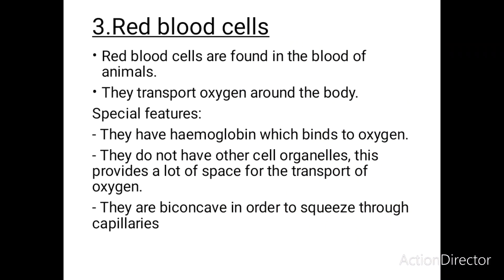Red blood cells are found in the blood of many animals and they transport oxygen around the body. The special features that enable red blood cells to transport oxygen are: possessing hemoglobin, a protein that binds to oxygen; having no other cell organelles inside them, which provides a lot of space for oxygen transport; and being biconcave in shape, which enables them to squeeze through the capillaries.